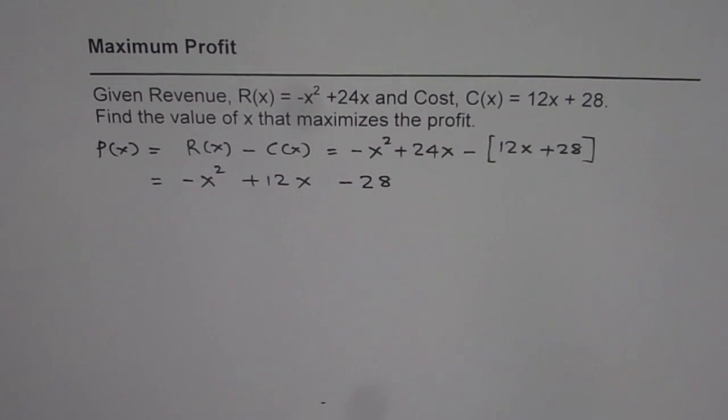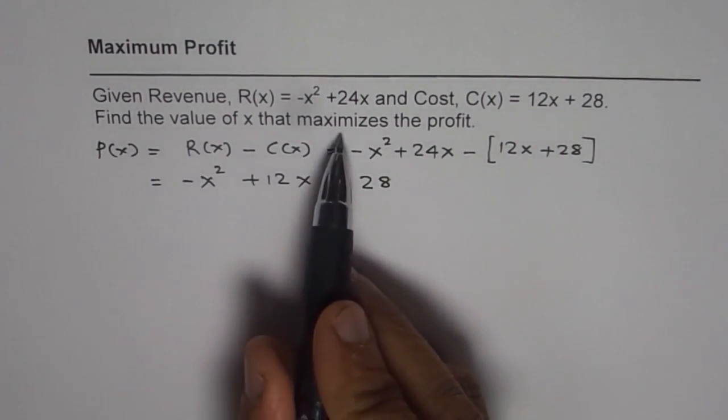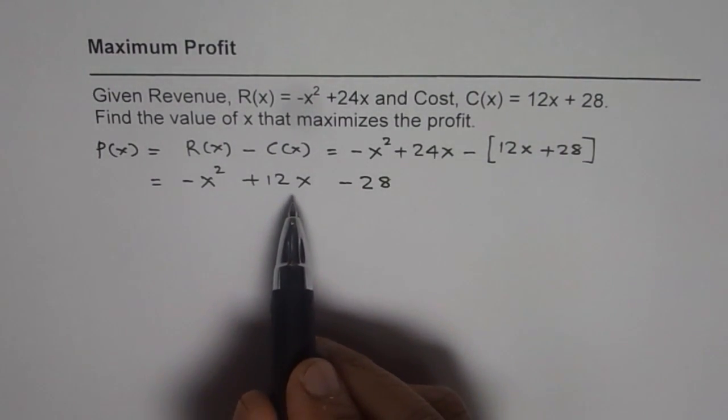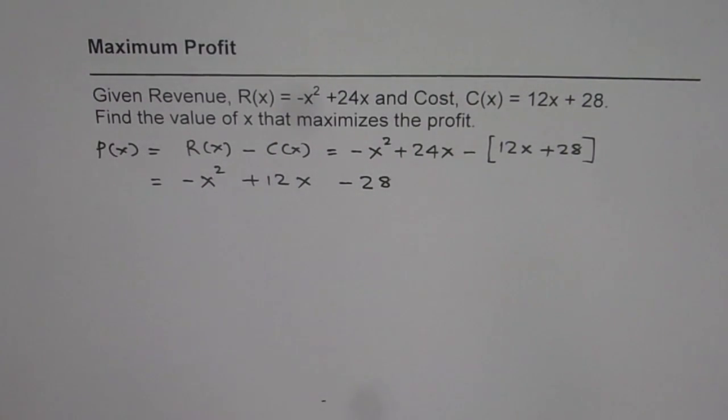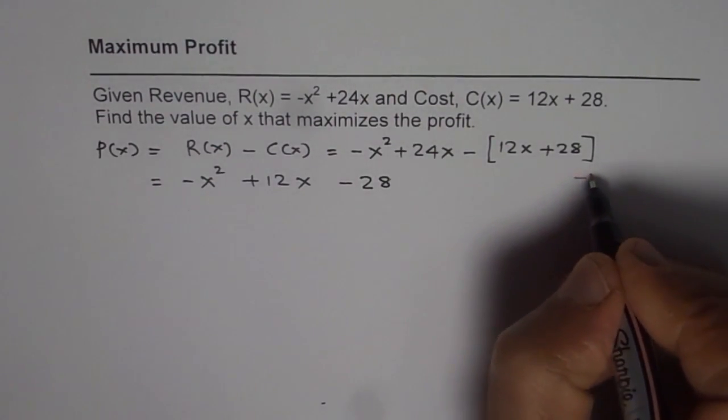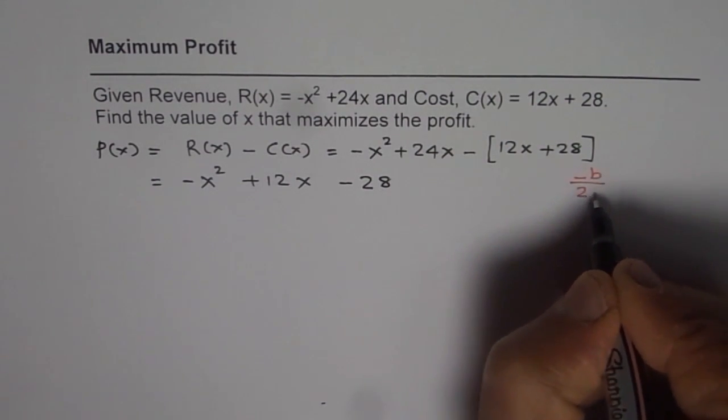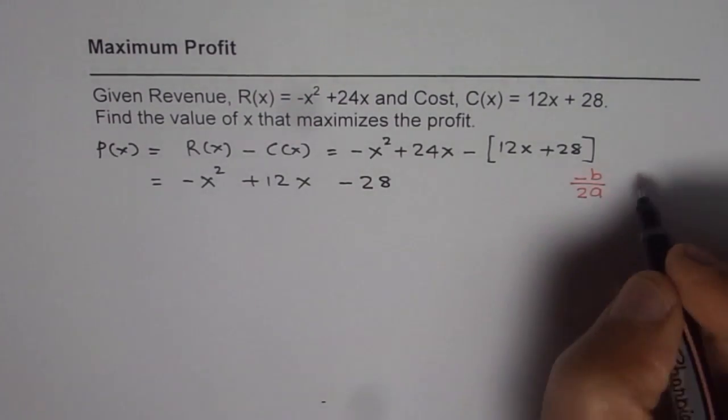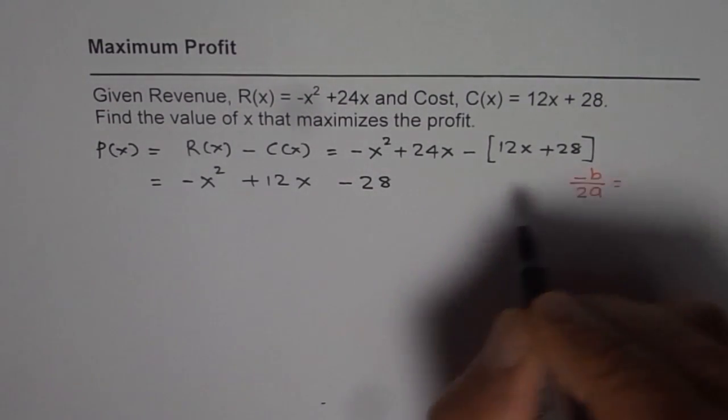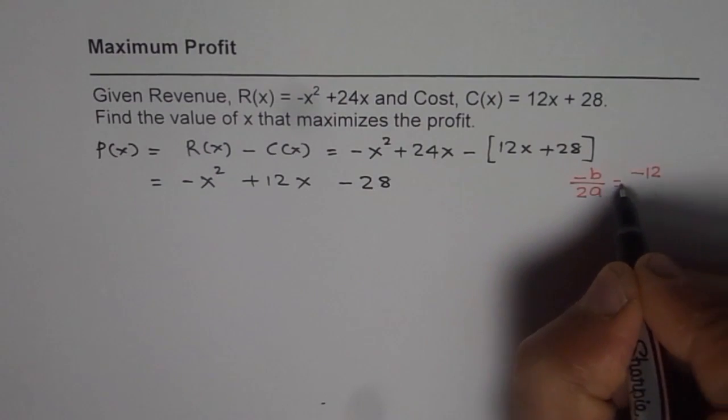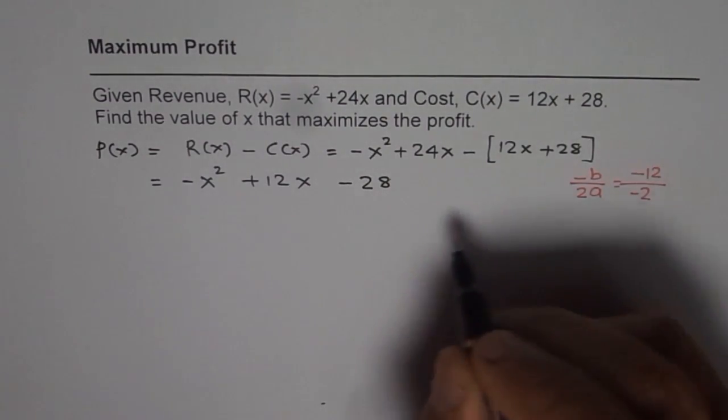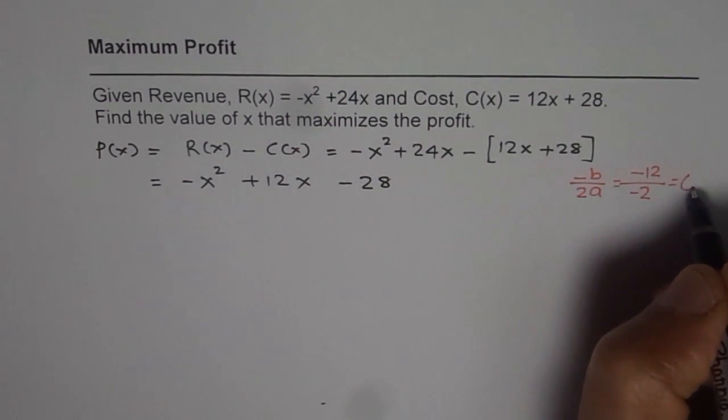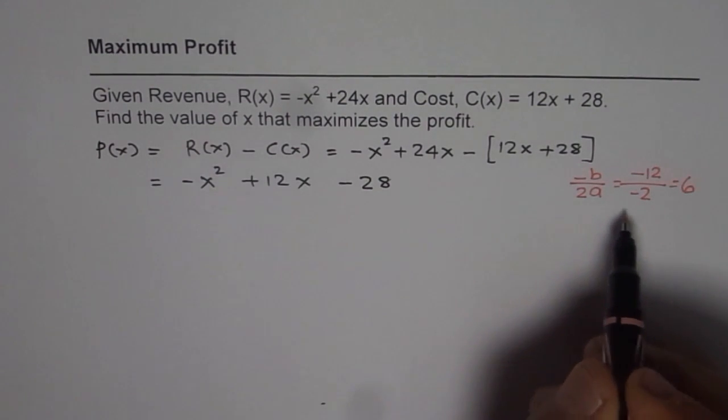Now to find the value of x which will maximize the profit, we can do completing the squares or maximum profit will be at value of -b/2a. So maximum profit will be at -b/2a. b is 12, so it will be -12 divided by 2 times -1 which is -2. So it will be for x equals to 6.